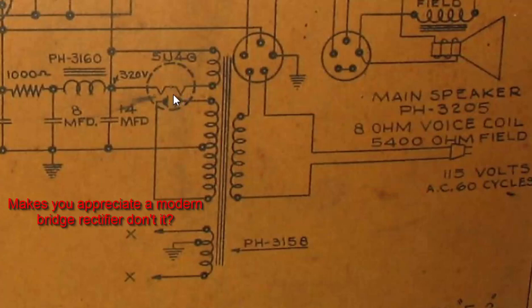Half a cycle later, now the right plate is negative, and the left plate is positive. The electrons then leave this left filament and flow into that adjacent plate.